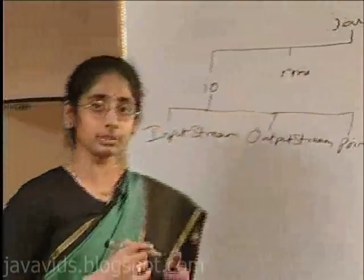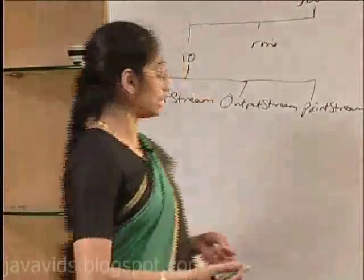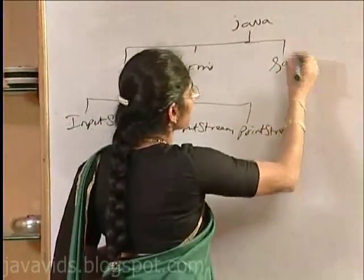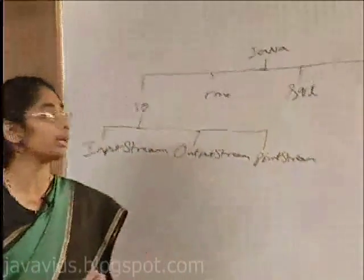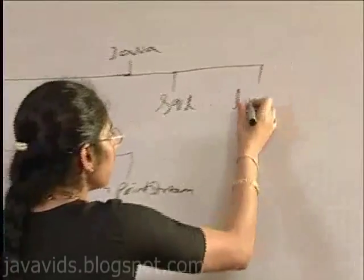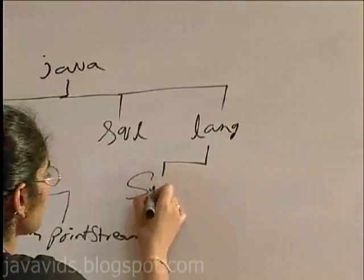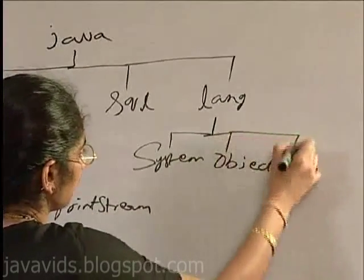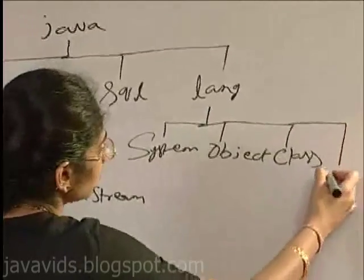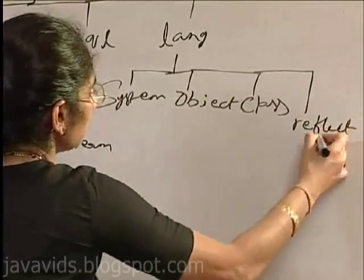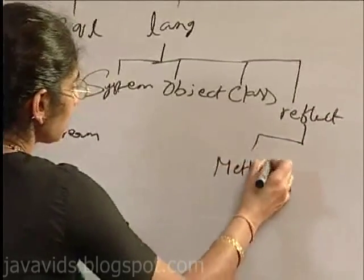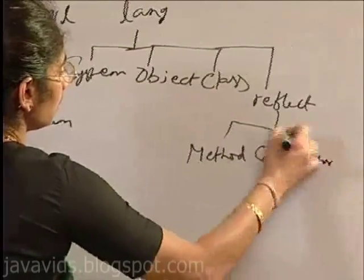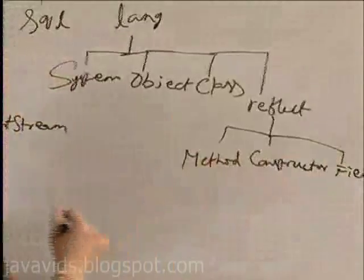Similarly, you have the RMI package which consists of its related classes. You have the SQL package which has classes related to the database. You have the lang package which consists of, for example, the System class, the Object class, the Class class. Under lang, we have a reflect package which consists of Method class, Constructor, Field, etc.